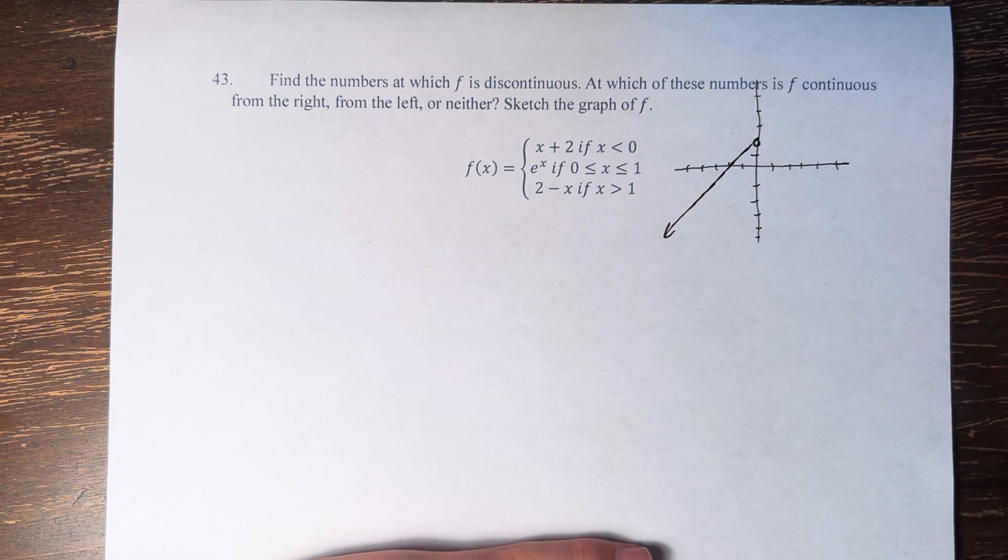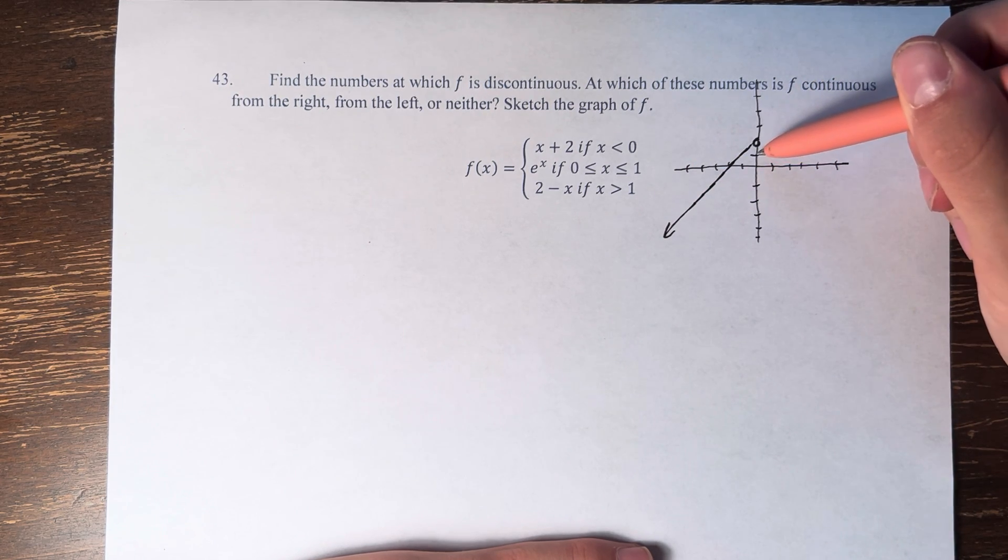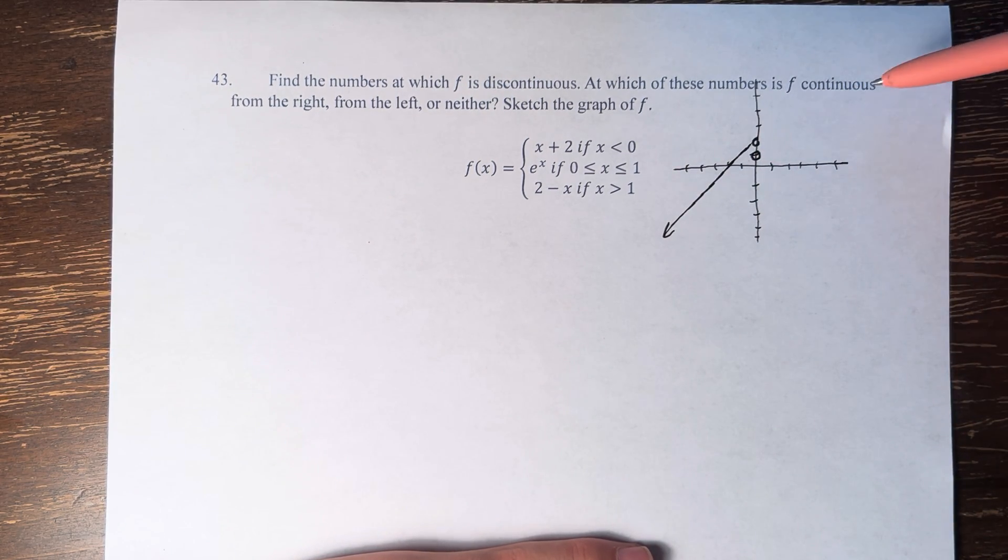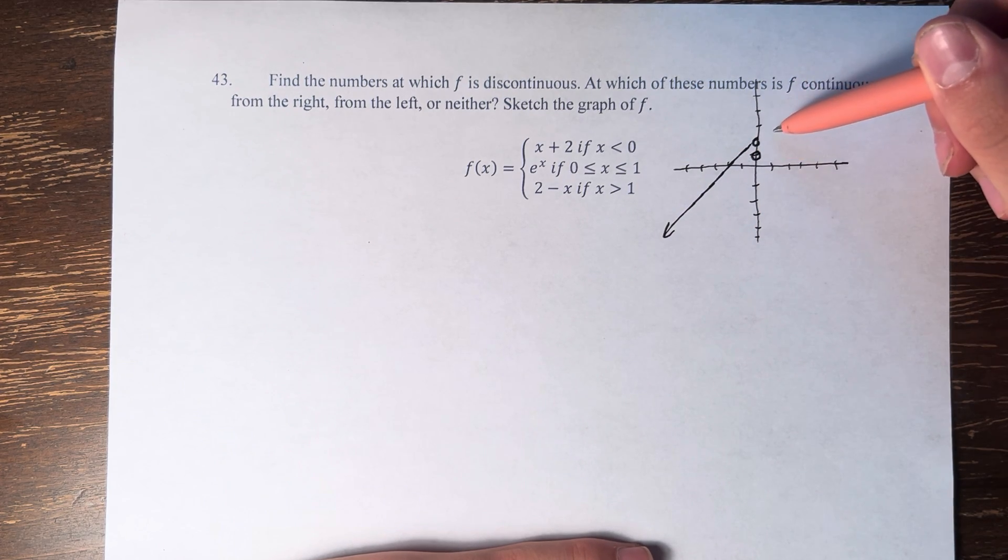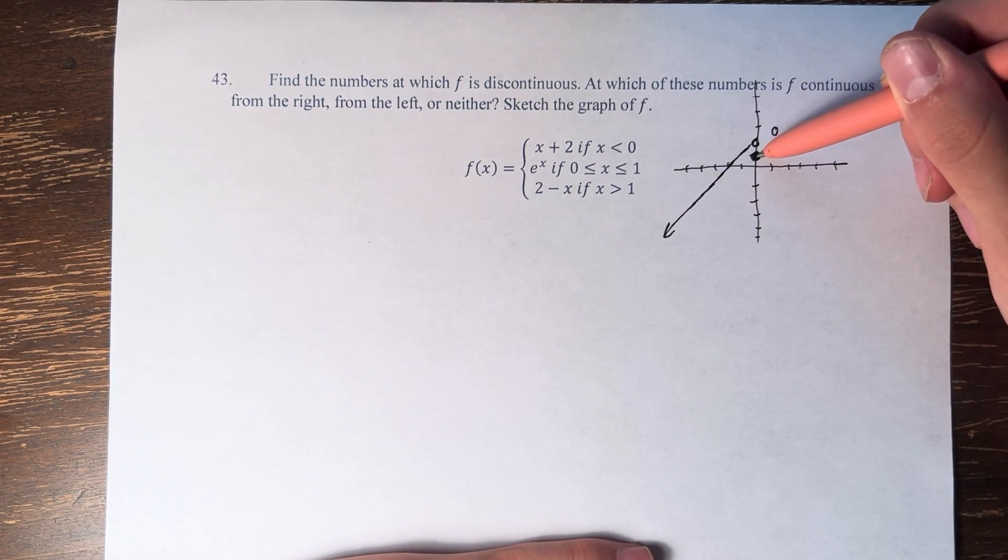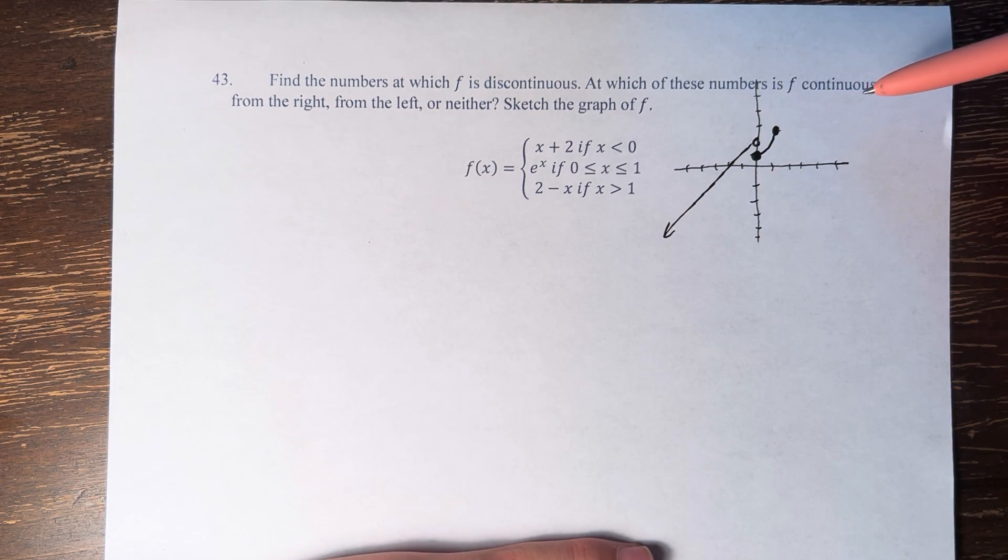The function is equal to e to the x if x is between 0 and 1. So that looks a little bit like this, where we are starting at 0, at the point 0, 1, and we're ending at 1, which is going to be at the point 1, e. And we're inclusive on both sides, so we're shading in these circles to denote that the function is equal to these values. And it looks like that.